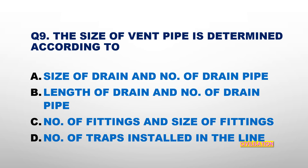Question number 9: The size of vent pipe is determined according to — size of drain and number of drainpipe, length of drain and number of drainpipe, number of fittings and size of fittings, or number of traps installed in the line? The answer is size of drain and number of drainpipe.